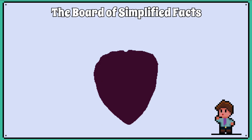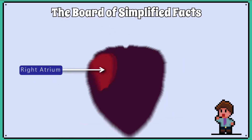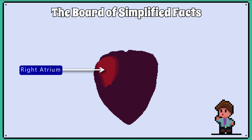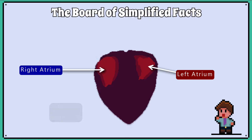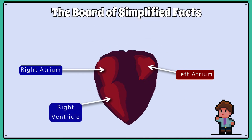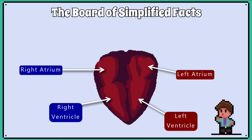The heart has four chambers. The top two chambers, closer to your head, are called the right atrium and the left atrium. The bottom two chambers are called the right ventricle and the left ventricle.